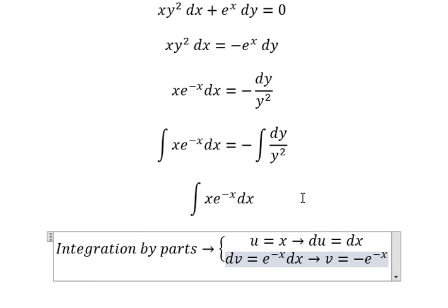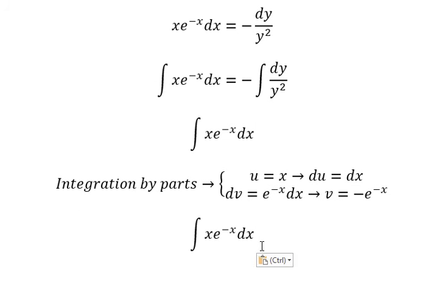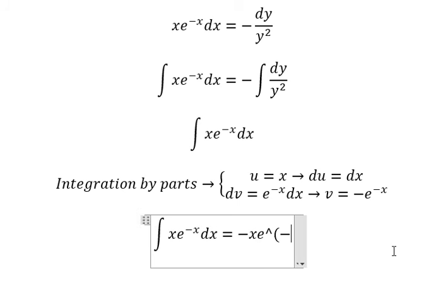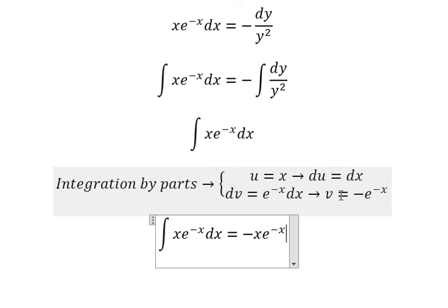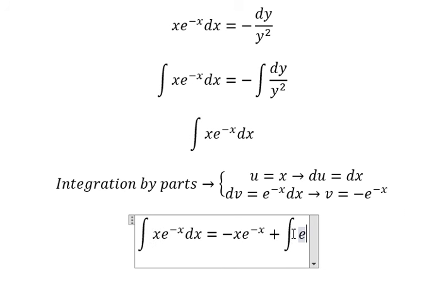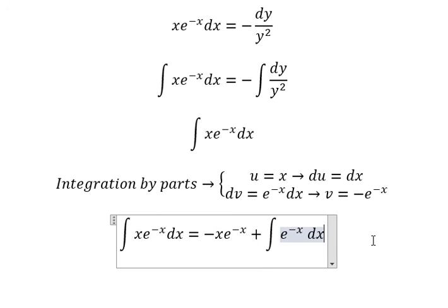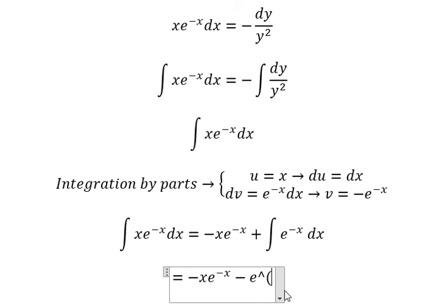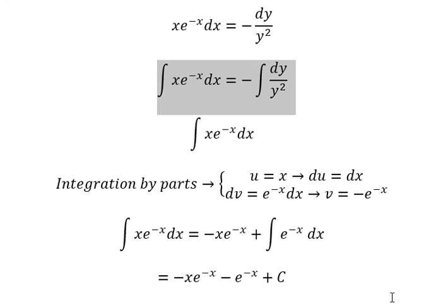We put u multiplied with v, so we get negative s e to the power of negative s. Then we have du multiplied with v, giving us a positive term, and the integral of e to the power of negative s ds, which gives negative e to the power of negative s plus C. Now we have the final form of the left-hand side.